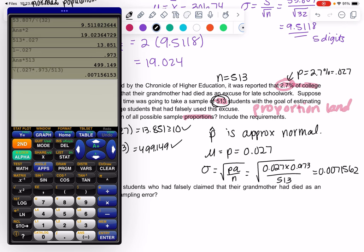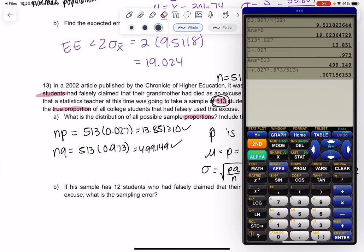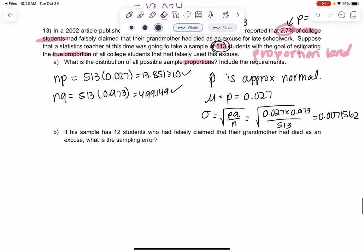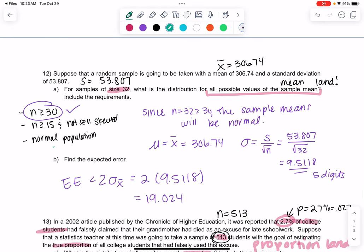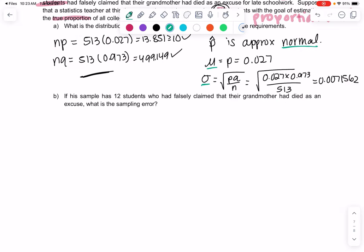Everything after the zeros counts as digits. Make sure you keep a lot of digits. More is always okay, less is not. It creates error. That's our distribution with the mean and standard deviation. We've got to make sure we check the requirements. Once we check the requirements, we can confirm that it's normal and find the mean and standard deviation. Same in proportion land. We just have different requirements and different mean and standard deviation, but it's all the same process: requirements, normal, mean, standard deviation. Now we'll answer our last follow-up question.